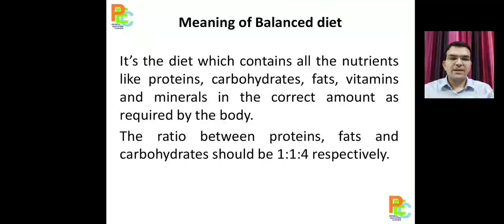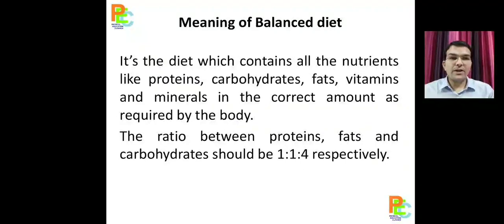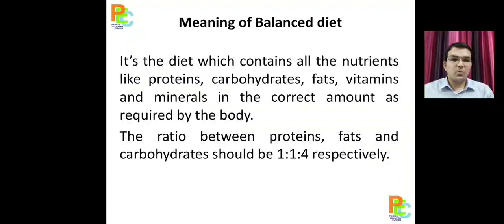A balanced diet — we already discussed the meaning, but let's repeat it once again. A balanced diet is the diet in which all the components are present in appropriate or required quantity, and the ratio between proteins, fats, and carbohydrates should be 1 is to 1 is to 4.